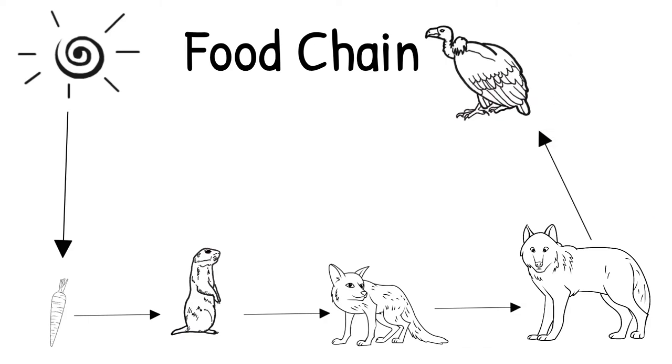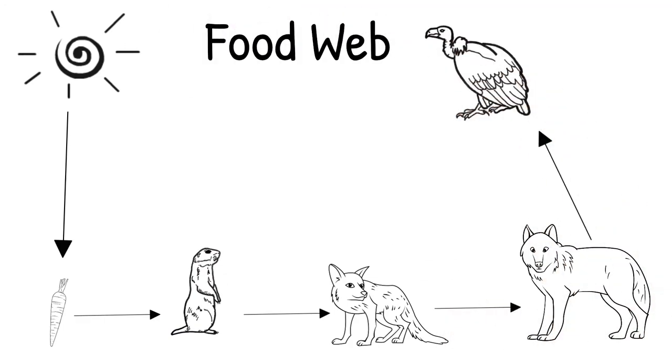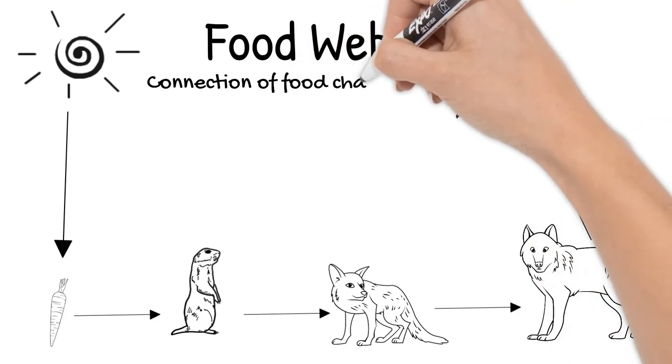Food chains show energy transfer from one organism to another, but is this the most realistic view of what is happening in an ecosystem? A fox doesn't only eat gophers, just as a vulture doesn't only eat dead wolves. A food web is useful to see more of what is happening in an ecosystem. A food web is a connection of food chains with many energy paths.